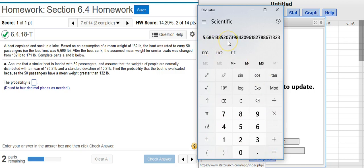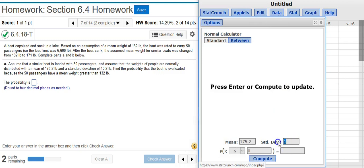This is the number I need to put in for the standard deviation inside the calculator StatCrunch. So, I'm going to copy that and paste that in here.